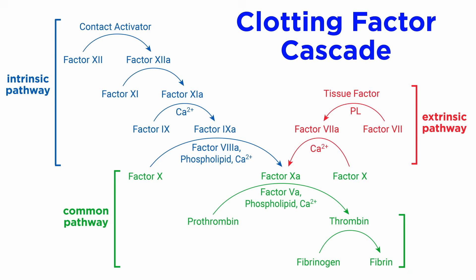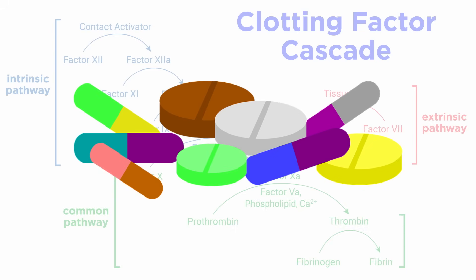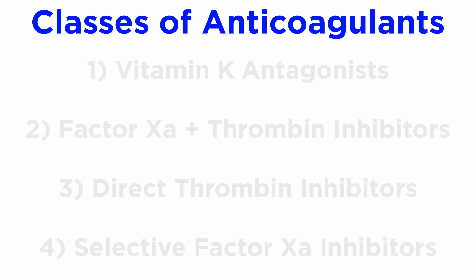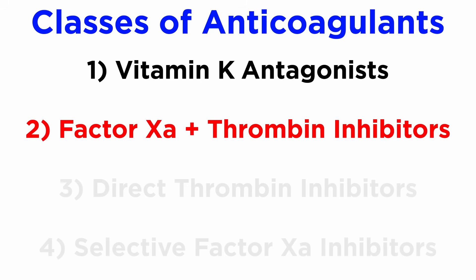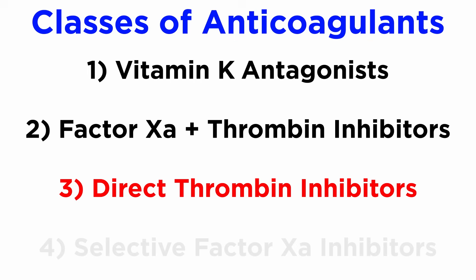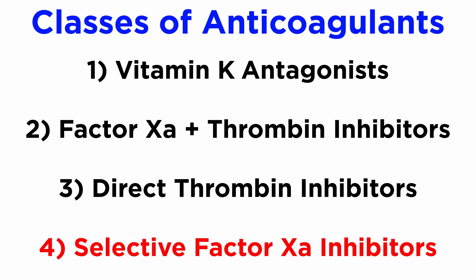Now that we understand important aspects of the clotting cascade and the functional endpoints of fibrin and thrombin, we can begin to better understand how different drugs inhibit the clotting cascade and act as anticoagulants. There are four main classes of anticoagulants: one, vitamin K antagonists; two, factor Xa and thrombin inhibitors; three, direct thrombin inhibitors; and four, selective factor Xa inhibitors.